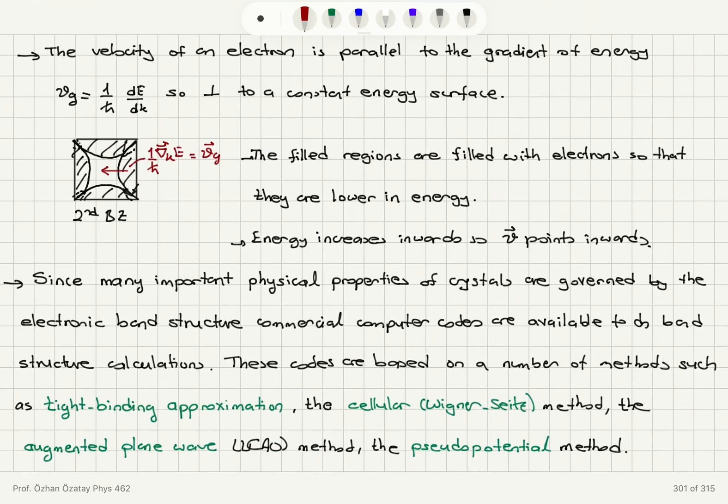Now when we consider the velocity of an electron, the velocity of an electron is parallel to the gradient of energy. So we have group velocity 1 over ℏ dE/dk. So it's always going to be perpendicular to a constant energy surface.